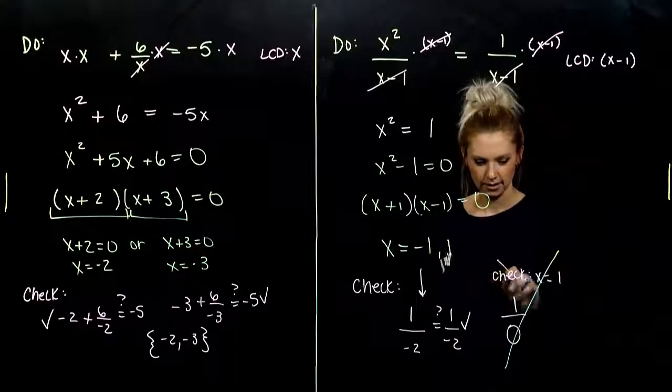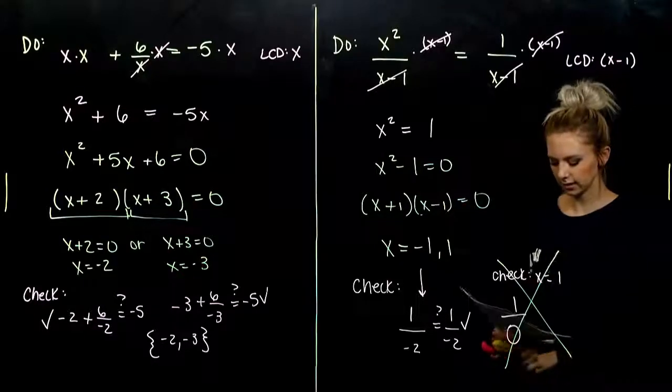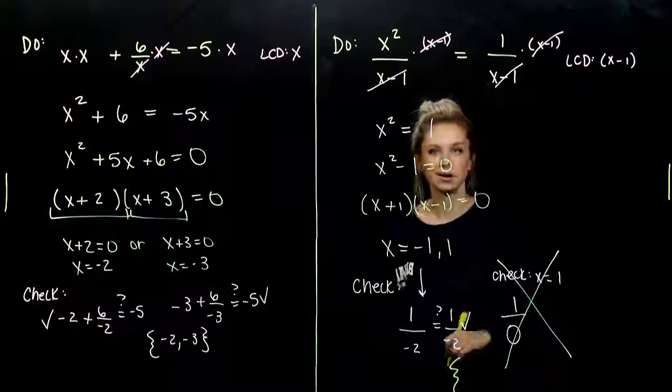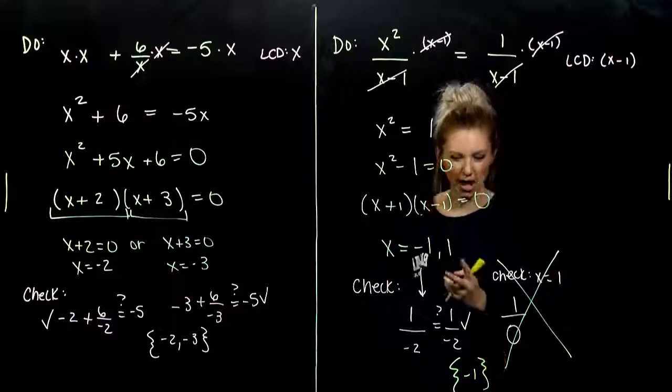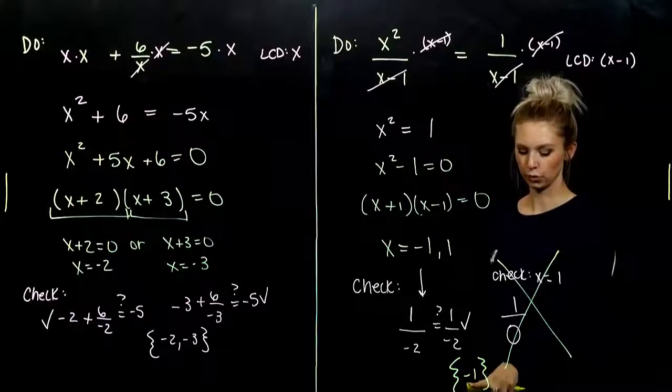So, that tells me x equal to one is out. Well, the only thing that I can plug in that will make this true and not cause anything to be undefined is negative one. So, even though I had two possible solutions, we always need to check because we had to rule one out.